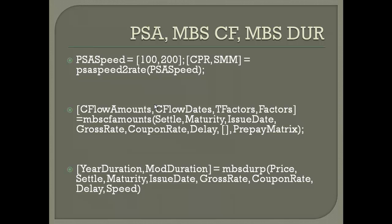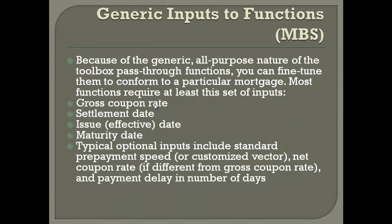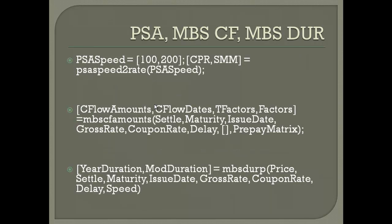There are also commands for duration and modified duration. The function MBS_DURP outputs year duration and modified duration. Its inputs include price, settlement date, maturity, issue date, gross date, coupon rate, delay, and speed. Many of these inputs are single elements, while others are matrices or structures.